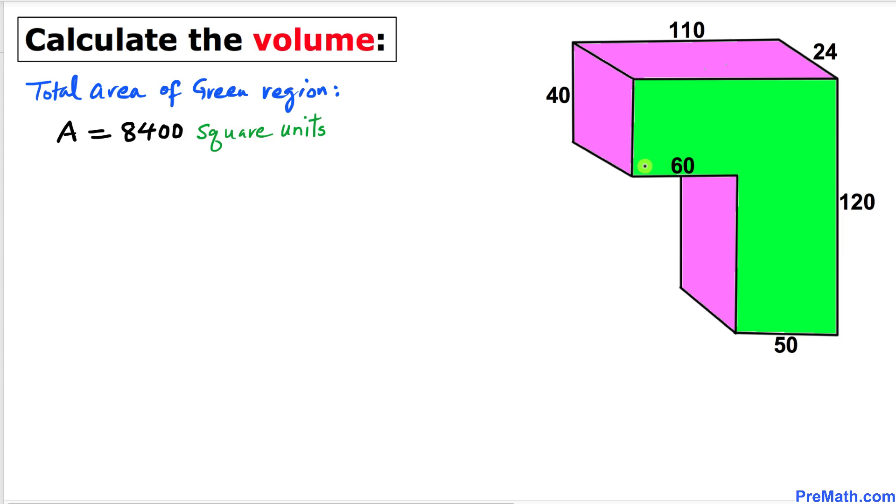Now let's calculate the volume of this given shape. Here's the volume formula: volume equals area times depth. In our case, the depth of this shape is 24. Therefore, the volume of this given shape is V equals 8400 times 24.